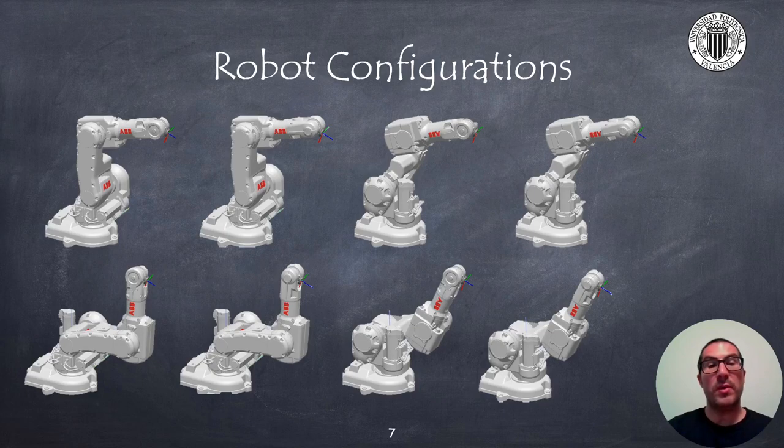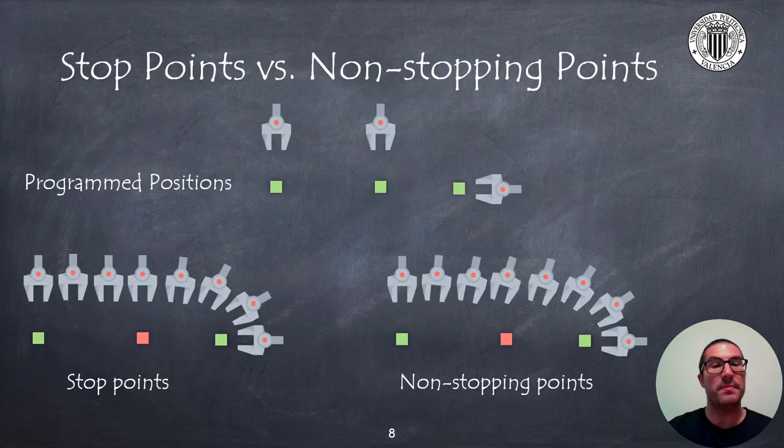The importance of knowing these configurations lies in the fact that some of them may collide with objects in the environment, while others may not. In addition, some are closer to joint limits, which implies that they have little margin for maneuvering and are generally avoided unless necessary.